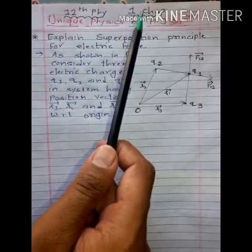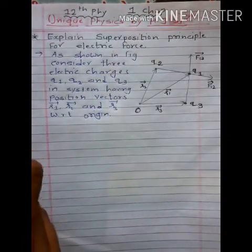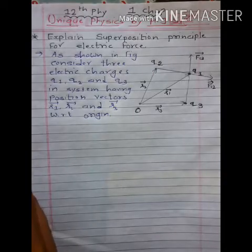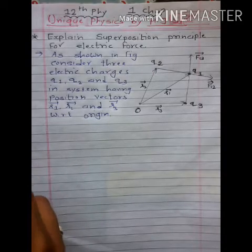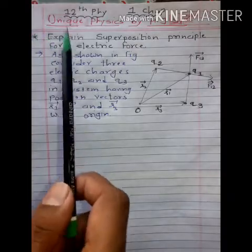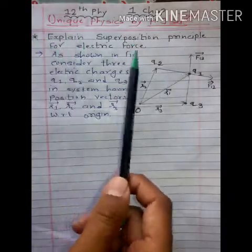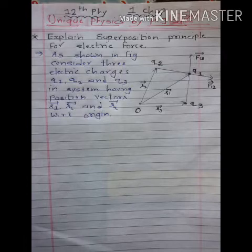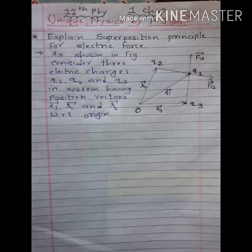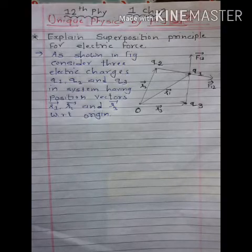Electric Charges and Field. Last time we explained illustration number 1.5. Now here we are going to explain the superposition principle for electric force. Last time we explained the vector form of Coulomb's law, using equations for vector F12 and vector F21. Similar equations we are going to use here.